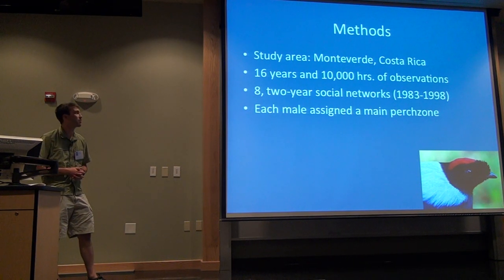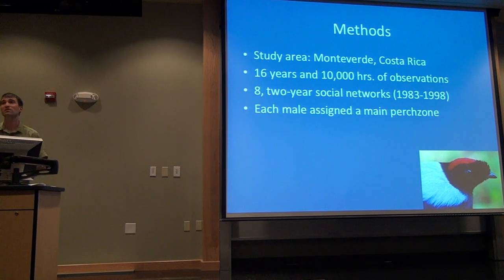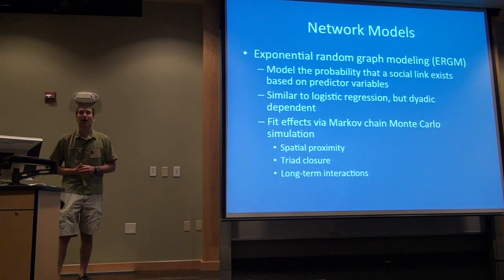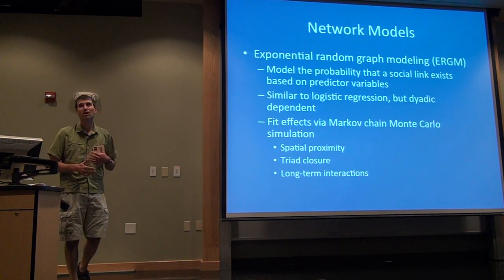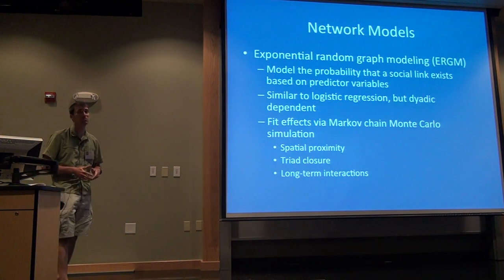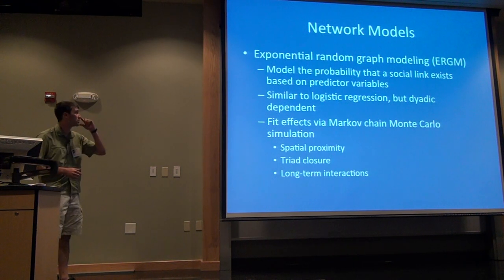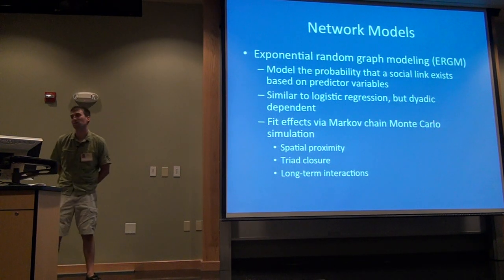We had eight specific networks that we were able to create out of this 16-year period. We assigned each male a spatial location in their two-year network based on where they spent most of their time. They do move around a little bit, but typically spend most of their time at one central perch zone displaying with the males there. We did a variety of exploratory analyses to look at what potential processes might be important to forming these social networks. Part of my postdoc was to bring in more statistically rigorous techniques to social network analysis, specifically in animal social networks, because it's still a very emerging field.